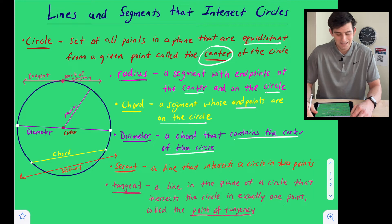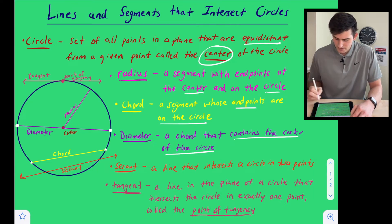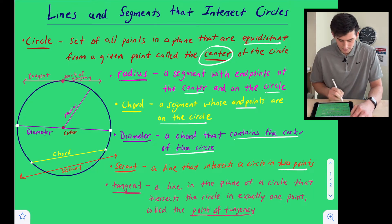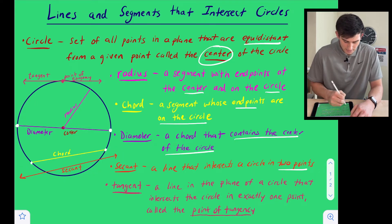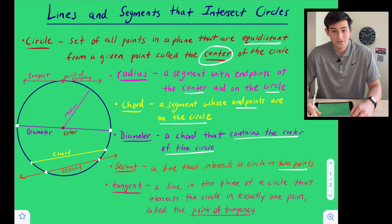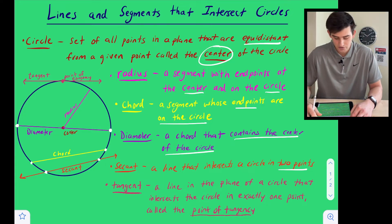Next is the secant. A secant is a line that intersects a circle in two points. Here's our secant down here at the bottom of our circle, and we can see the two points where our secant intersects our circle.